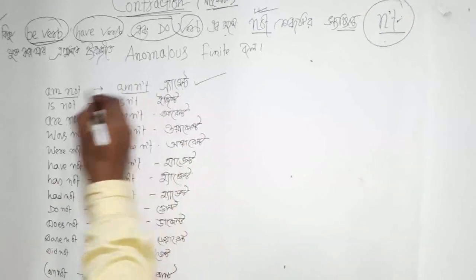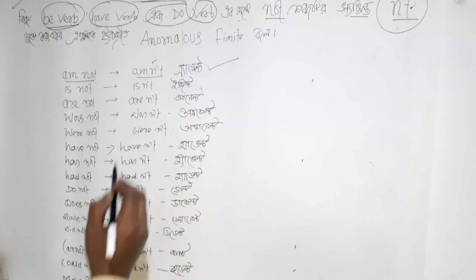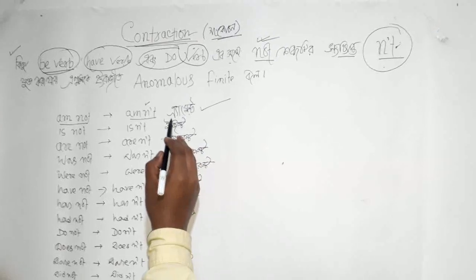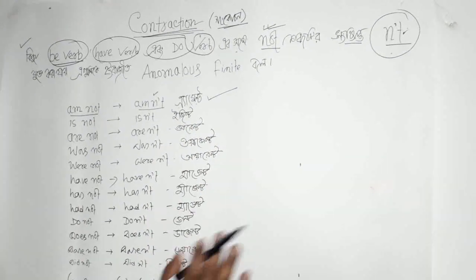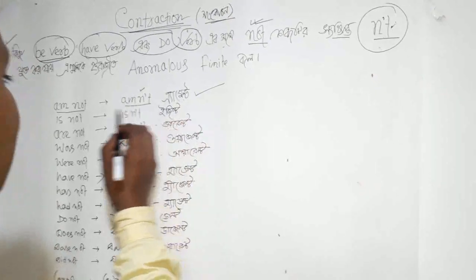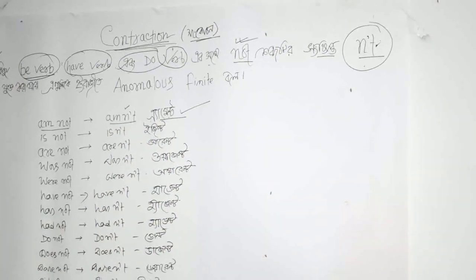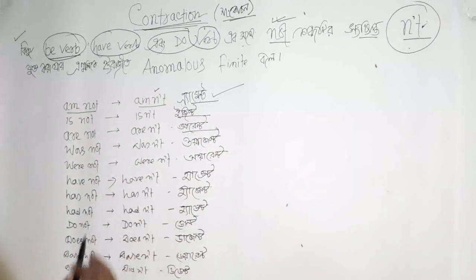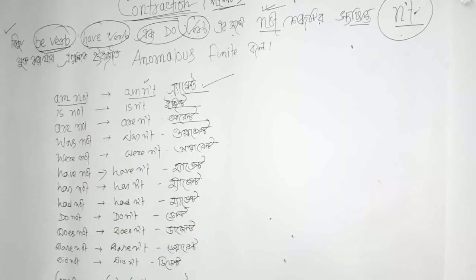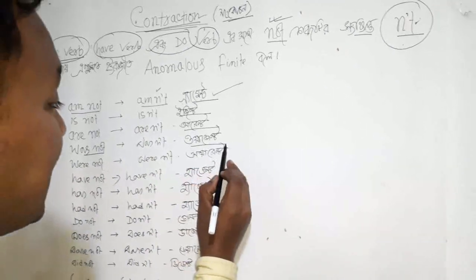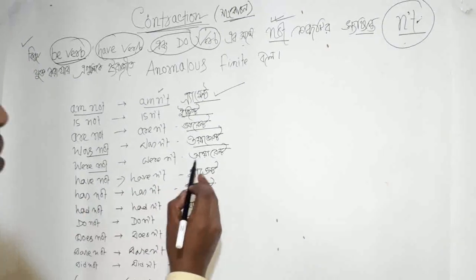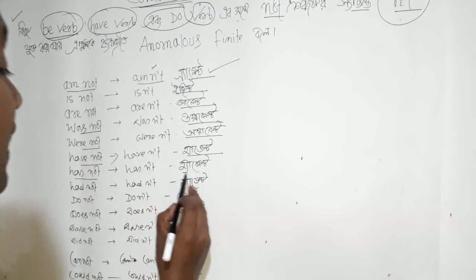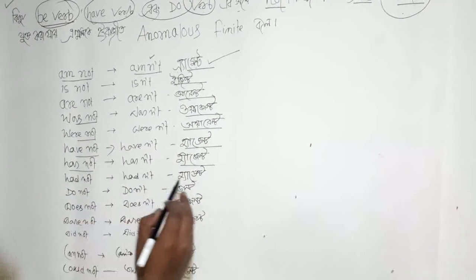I am not — 'is not' becomes 'isn't,' 'are not' becomes 'aren't.' Have-verb contractions: 'have not' becomes 'haven't,' 'has not' becomes 'hasn't,' 'had not' becomes 'hadn't.'